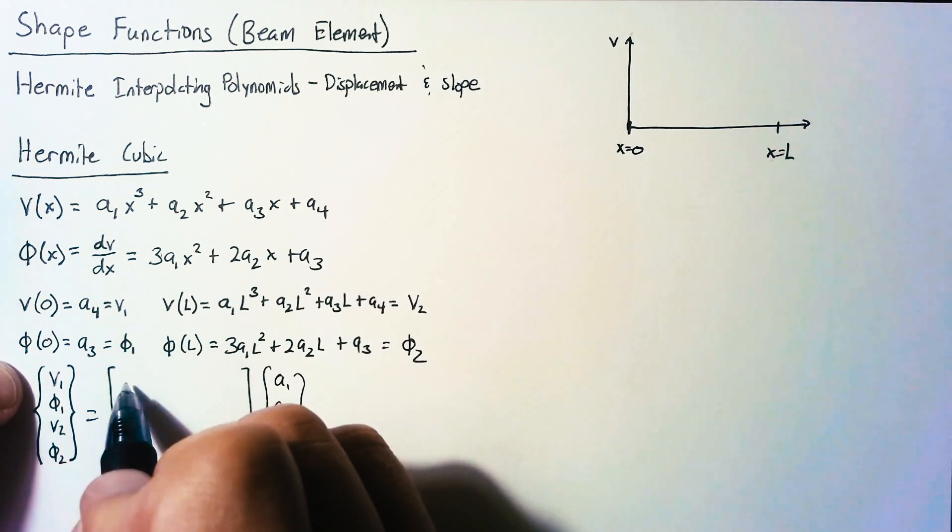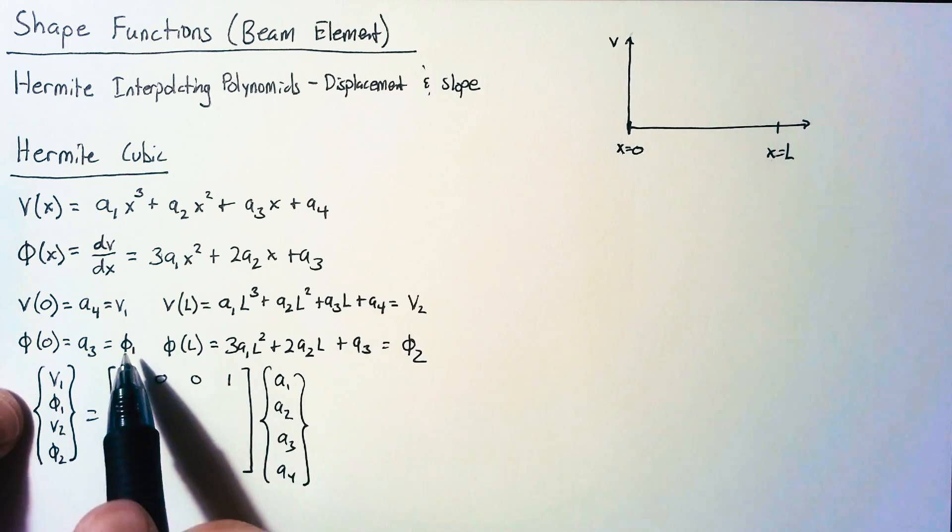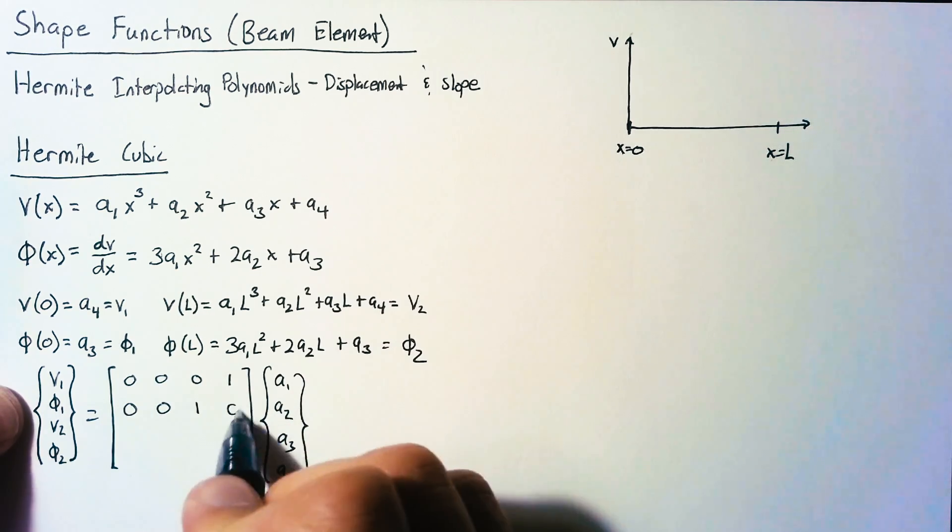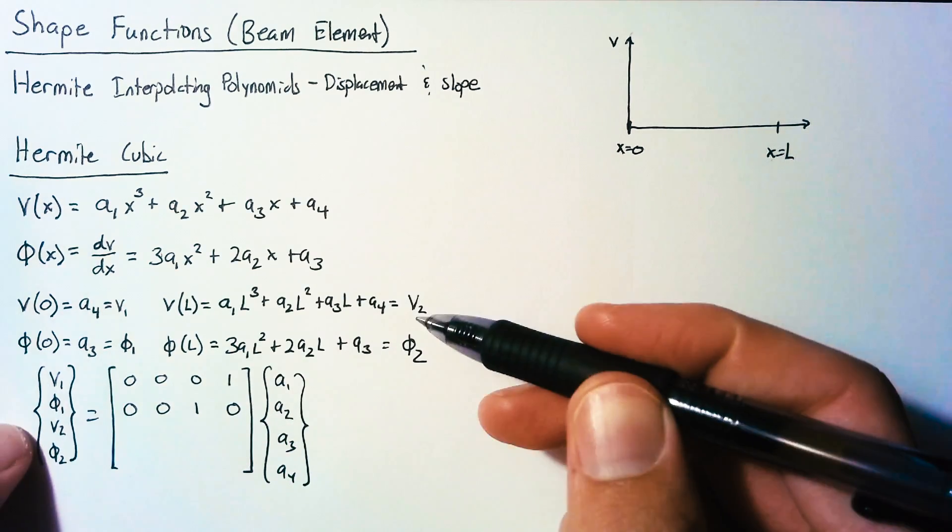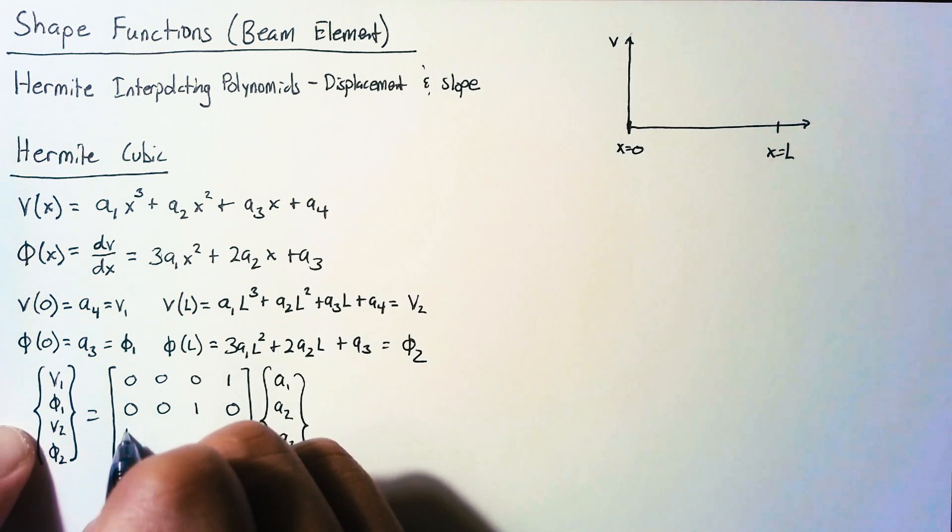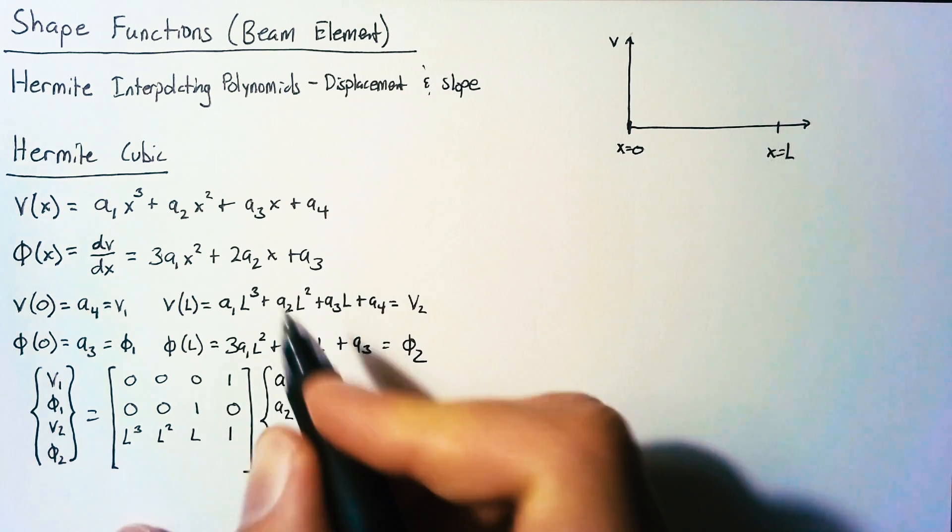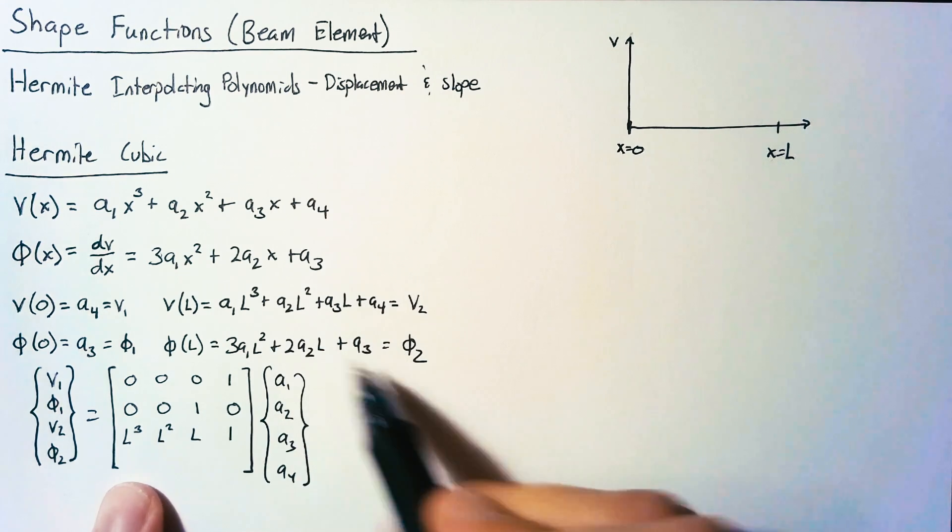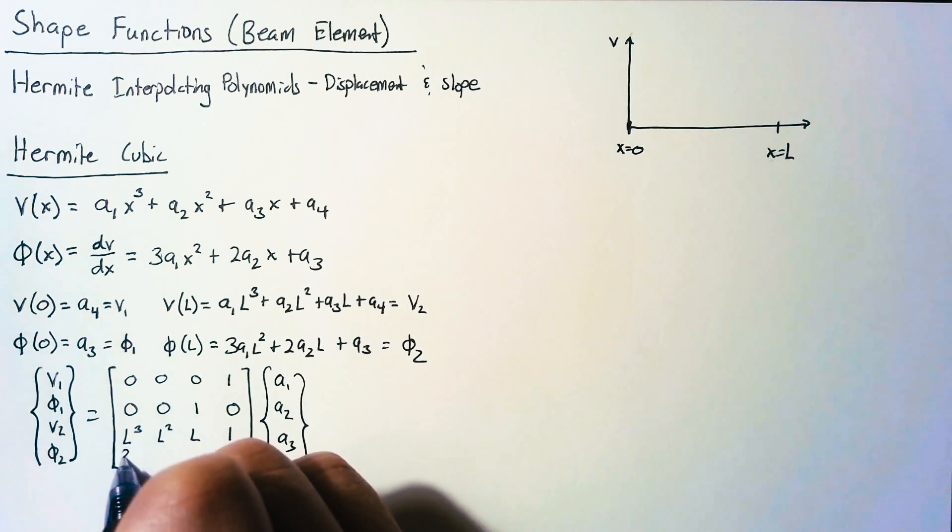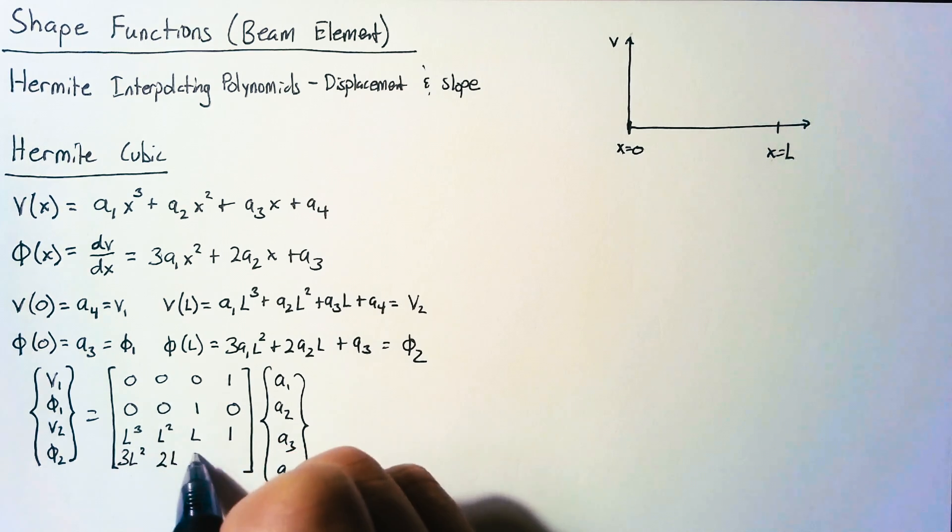Now v1 is simply a4 and nothing else. And phi1 is a3 and nothing else. V2 has components of all four, so we have l cubed, l squared, l and 1. And then phi2 has 3l squared, 2l and 1.